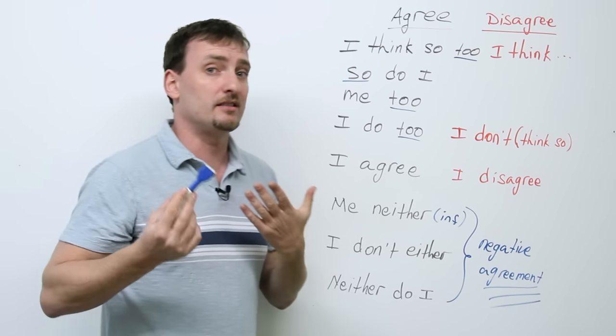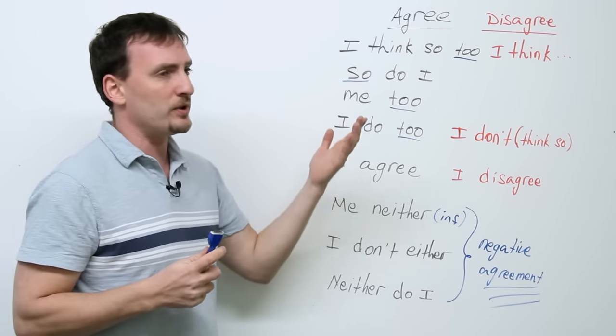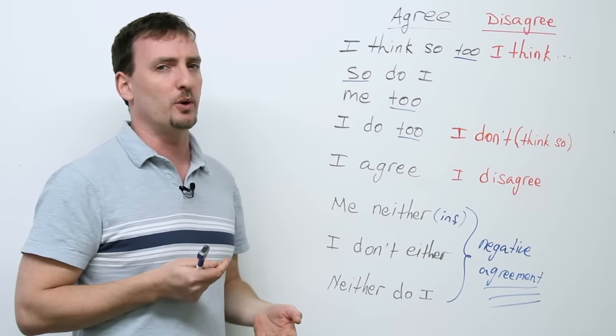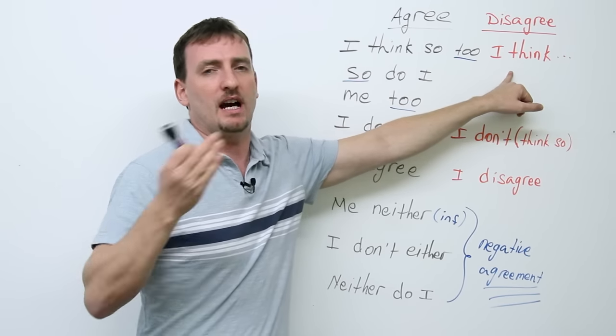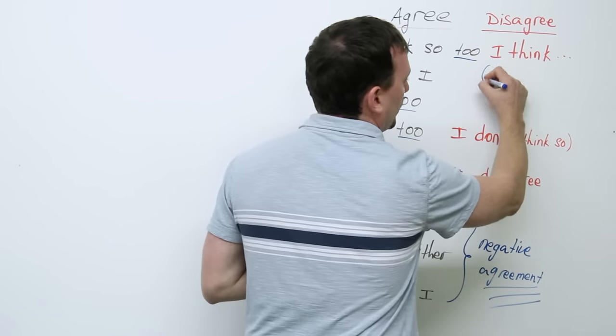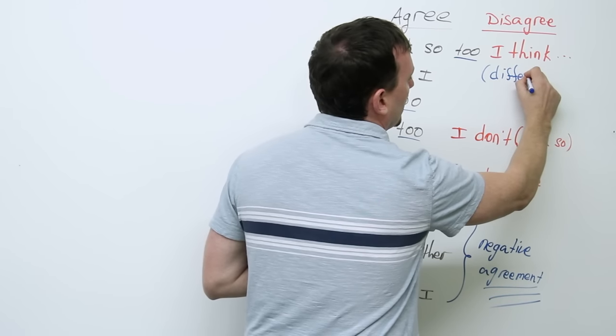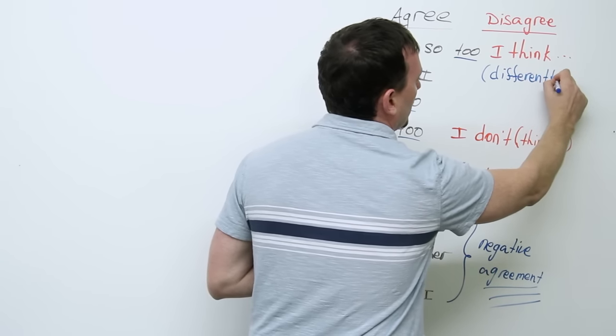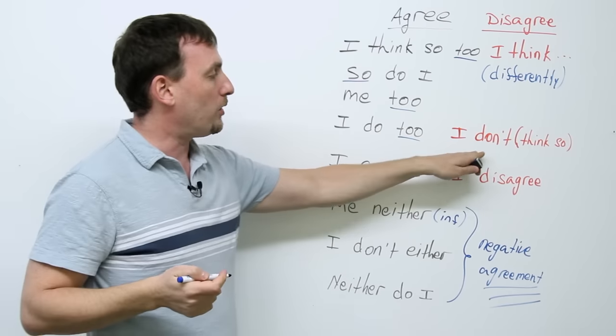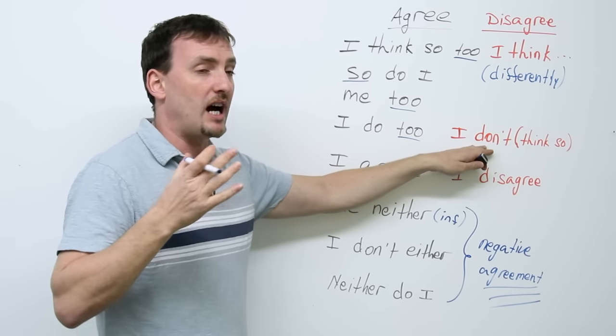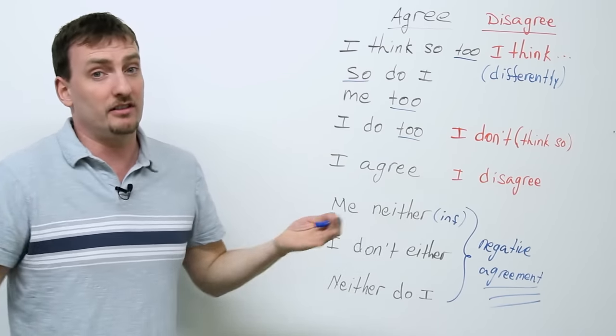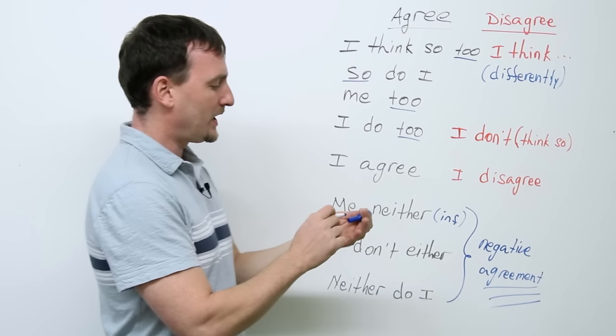Now, if you do want to disagree with someone, someone says, I think Mitt Romney is going to win, but you don't think so. You think Obama is going to win, you say the opposite. I think Obama will win. Right? So, the easiest way to disagree is just to say what you think. I think differently. I think something else from what you think. Okay? Or, very simple. I don't. Or, I don't think so. Or, very simple. I disagree. That's the easiest way to disagree is to say, I disagree. Makes sense. Right?